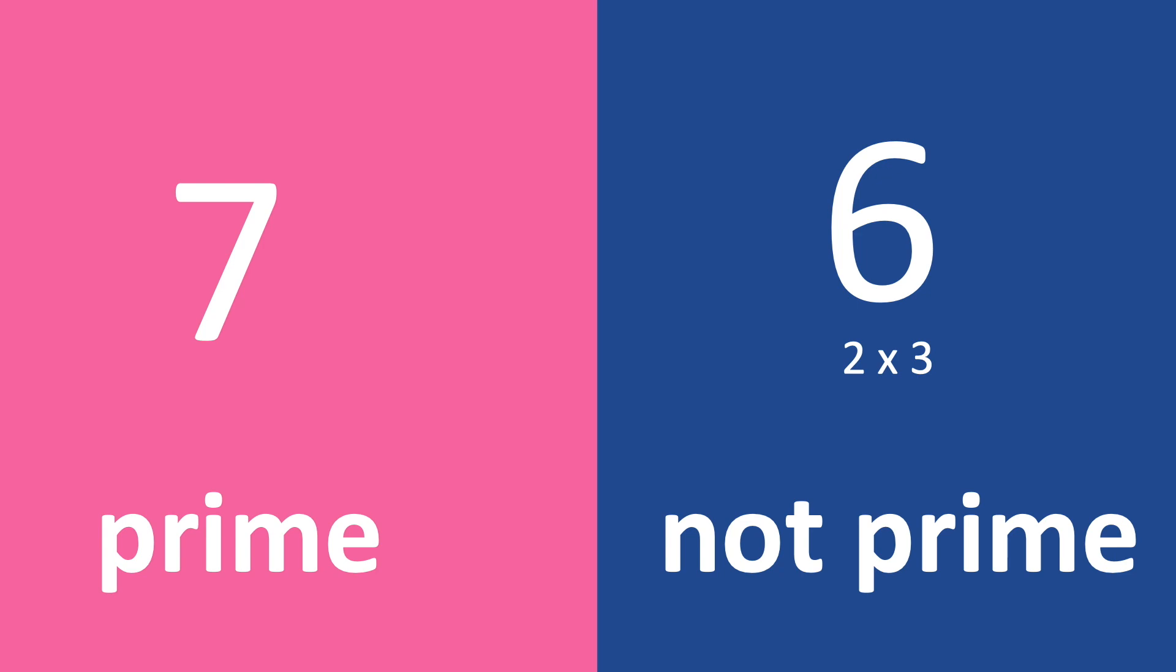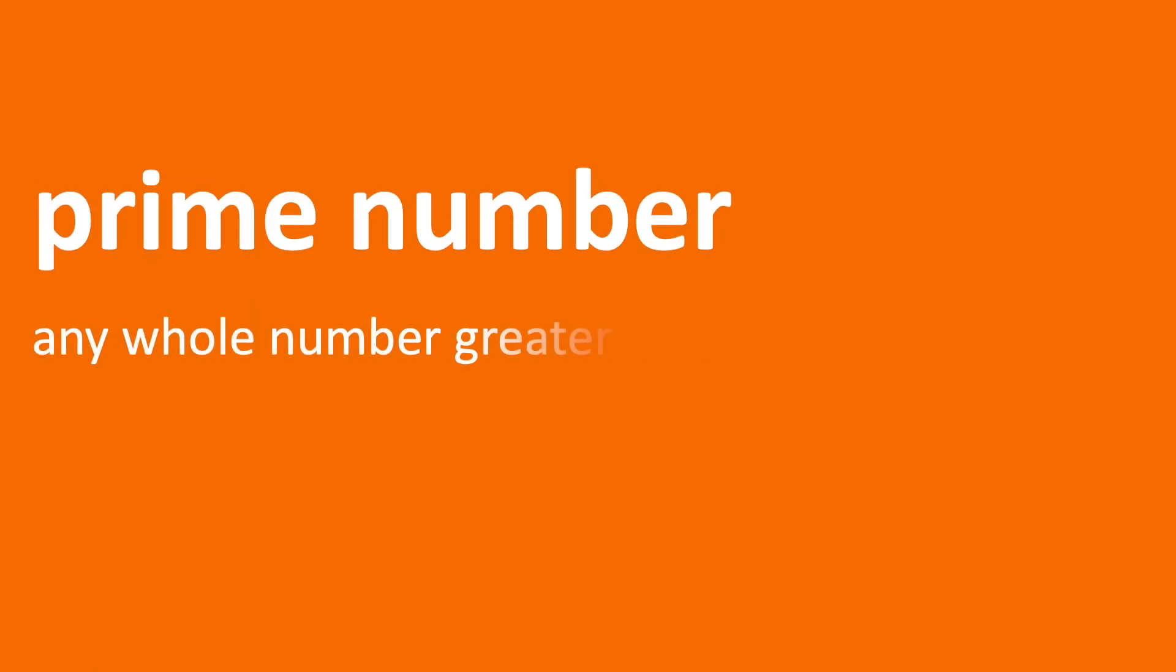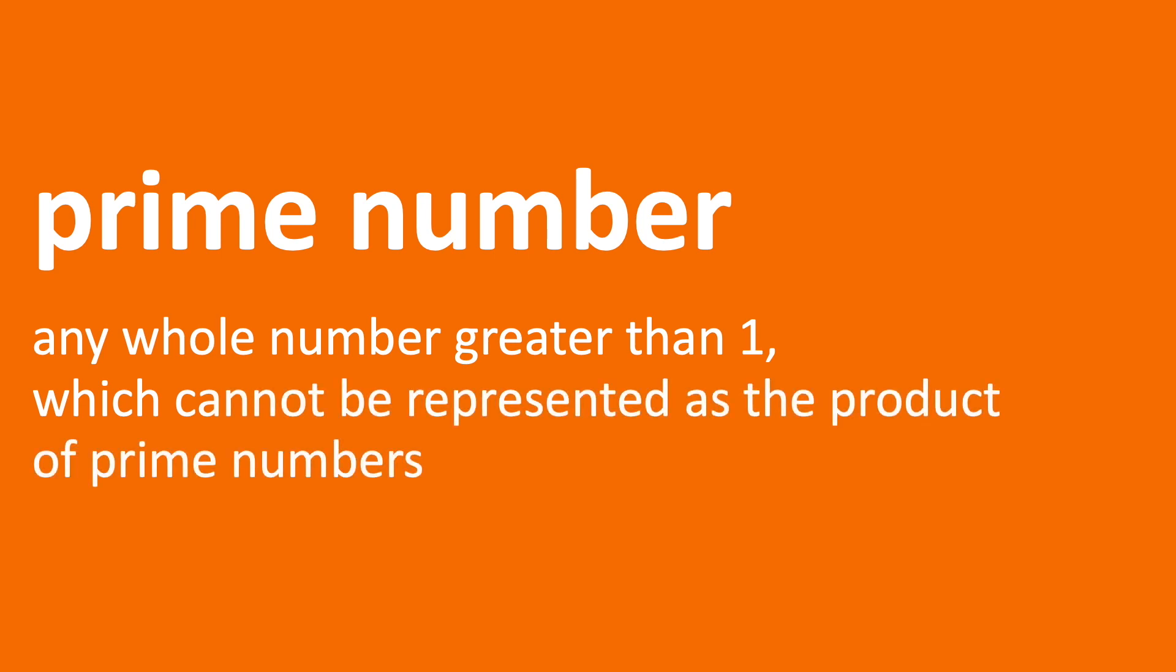How would the number one fit in here? In this case, you'd say that one can't be expressed as the product of two smaller numbers, so why wouldn't we include it? Well, the mathematicians still don't want to. So this definition is usually expressed something like, a prime number is any number greater than one, which cannot be represented as the product of prime numbers.